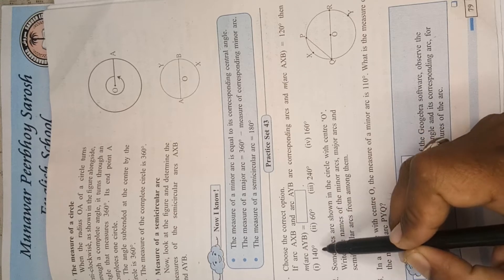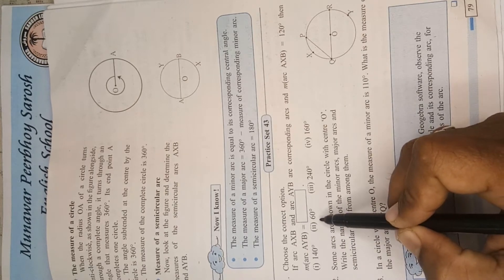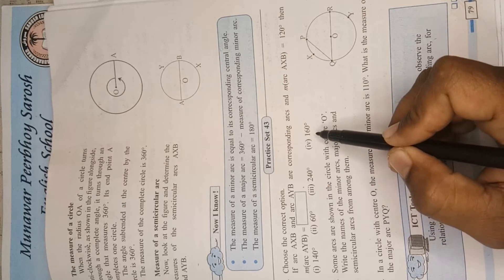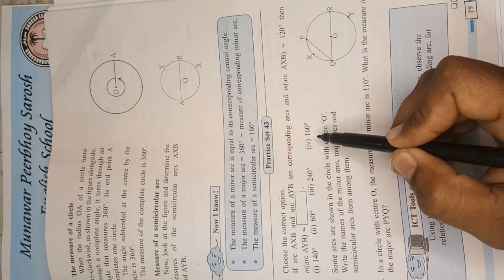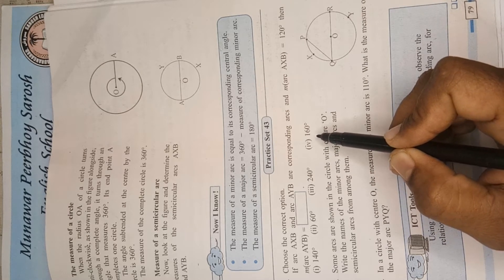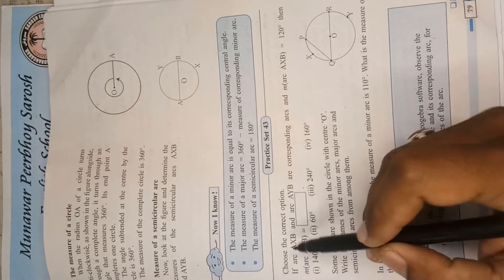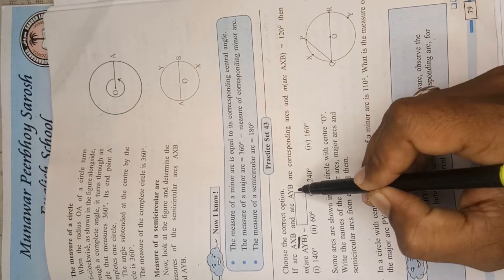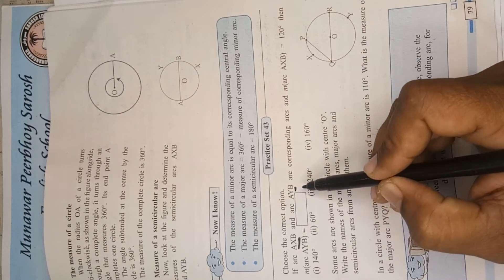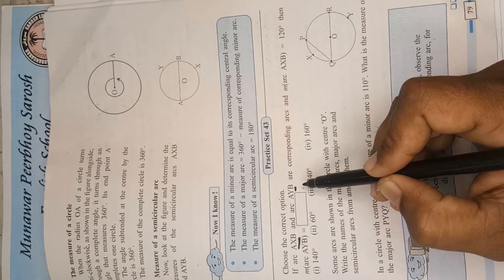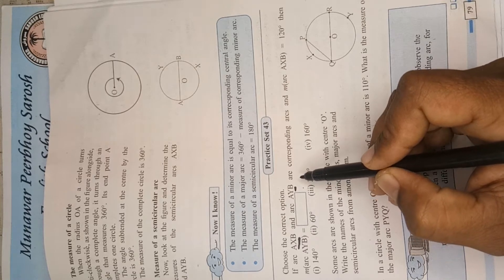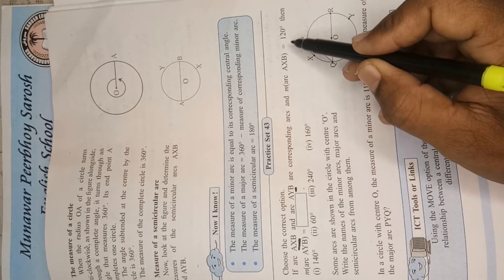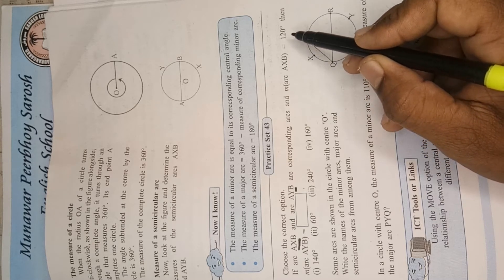And the options are 140 degree, 60 degree, 240 degree and 160 degree. So let's see the solution here now. First of all, see here there are two arcs: arc AXB and arc AYB, in which they have given to us the measurement of arc AXB.